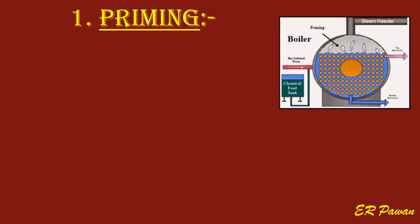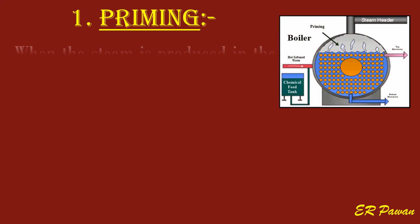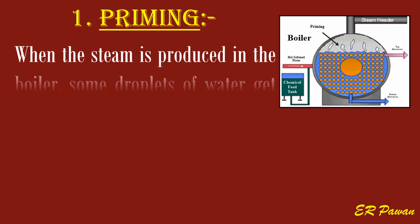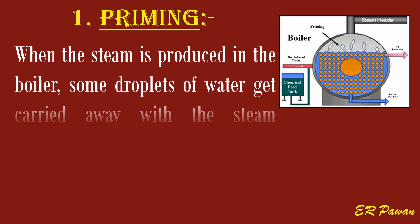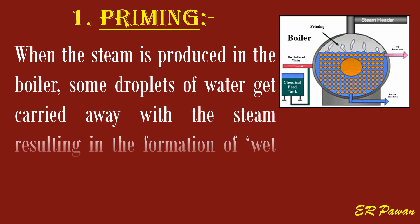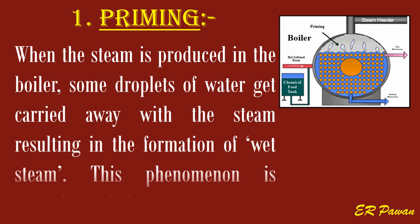Problem one: priming. When steam is produced in the boiler, some droplets of water get carried away with the steam, resulting in the formation of wet steam. This phenomenon is termed as priming.